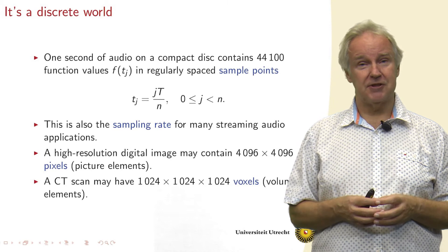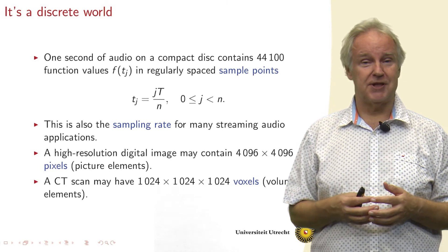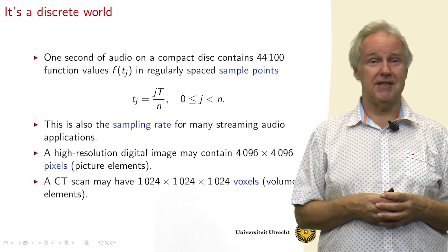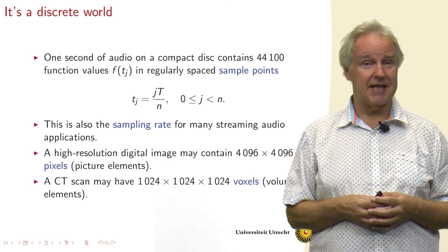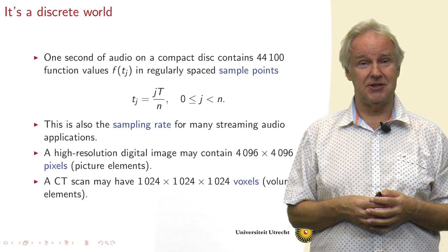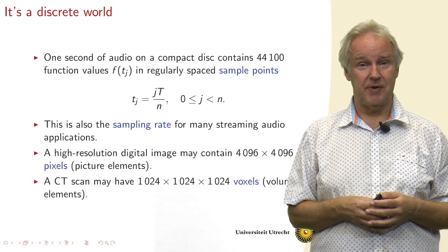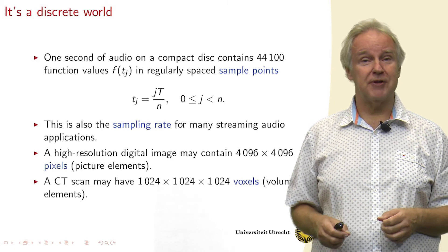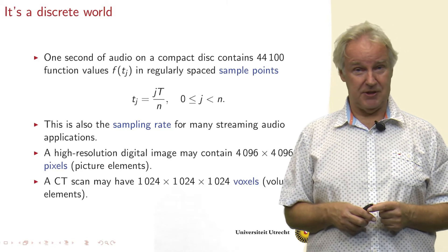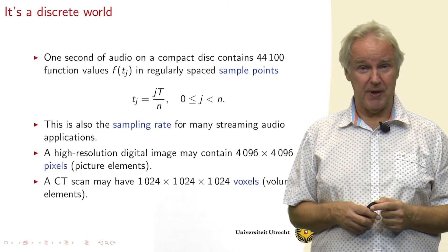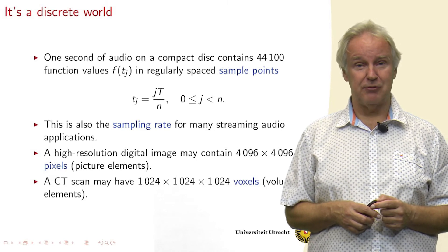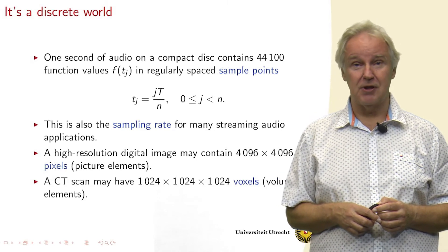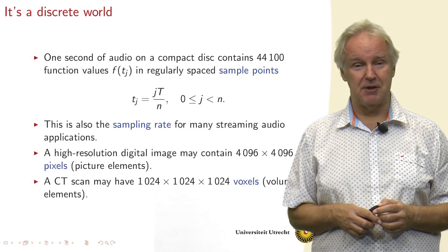In pictures, we have pixels, for example, a high-resolution digital image, a 4K image, that's 4096 times 4096 pixels. And in computer tomography, we have 3D pictures where we have 1024 times 1024 times 1024 voxels, volume elements.